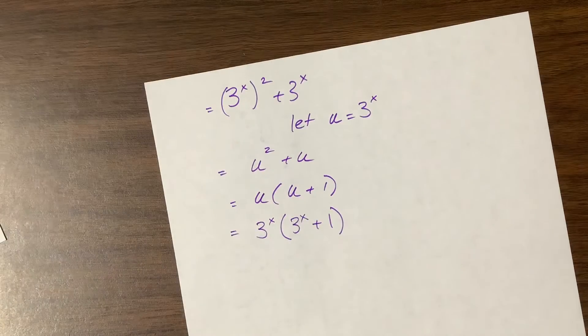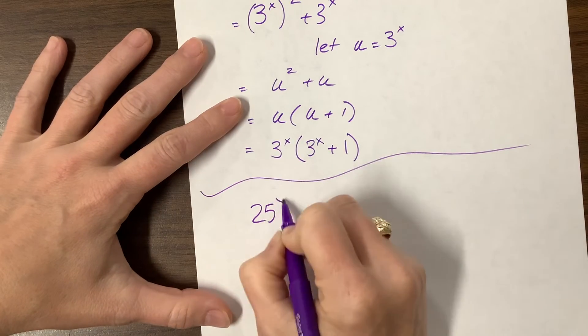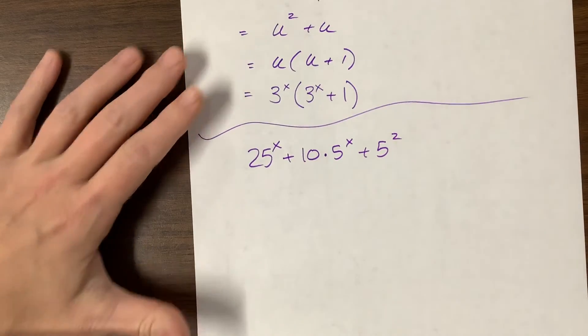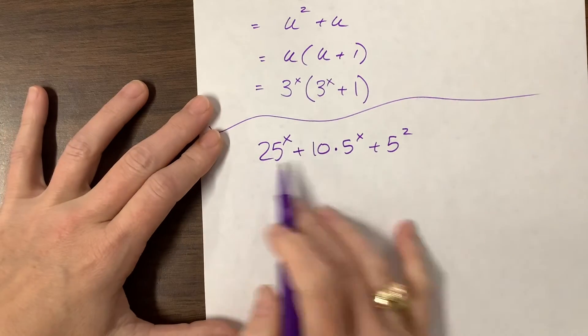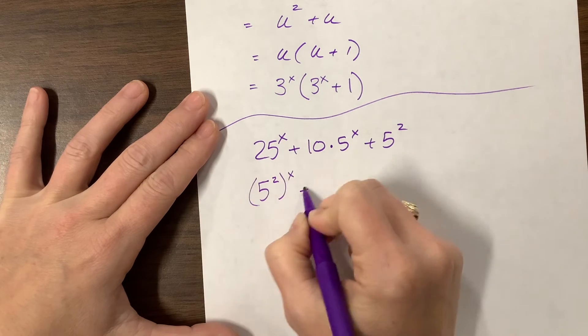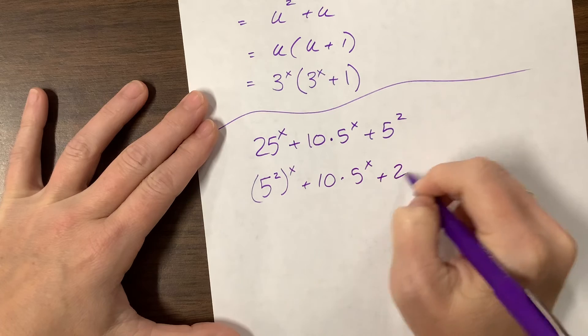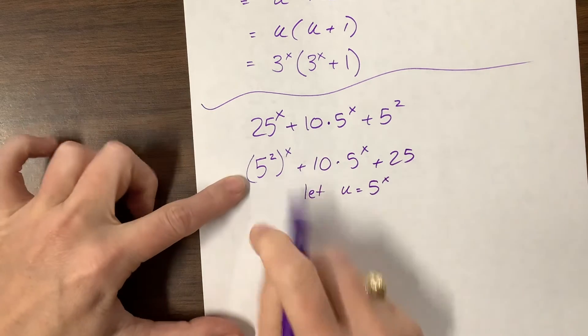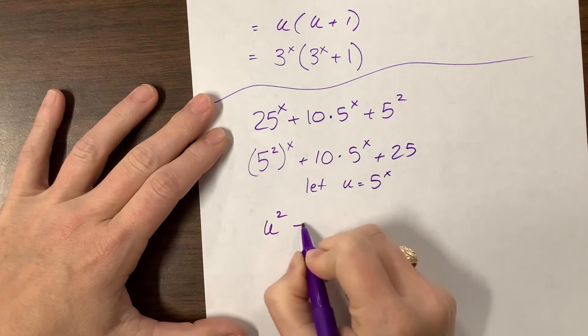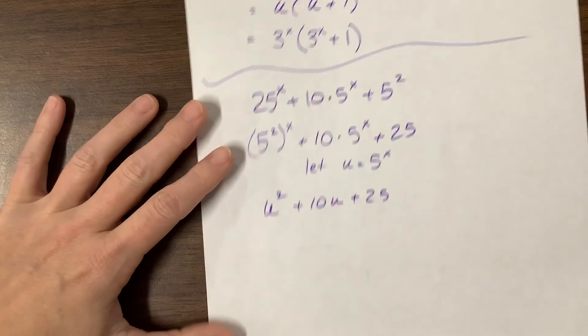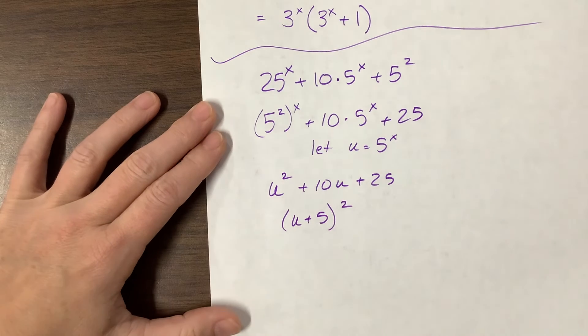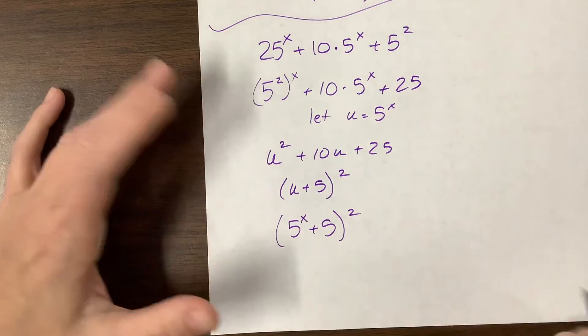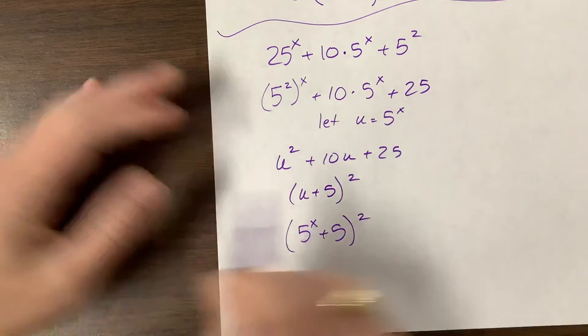Cool. Let me do one. Let me make one up really fast. If I have 25^x + 10 times 5^x + 5^2, and I want to factor that. Hopefully, I made up a decent problem just now. What I notice is I have powers of 5 or things that multiply. So this is 5^2 to the x plus 10 times 5^x plus, well, 25. And what I can do is I can let u, not me, but u equal 5^x. And this is, well, this was, I didn't rewrite it, but this is 5^x squared. And I can say that's u^2 + 10u + 25. And hopefully, you might recognize that this is u + 5 quantity squared.